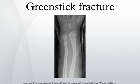The second form is a torus or buckling fracture, caused by impaction. They are usually the result of a force acting on the longitudinal axis of the bone. They are typically a consequence of a fall on an outstretched arm, so they mainly involve the distal radial metaphysis. The word torus is derived from the Latin word 'torus,' meaning swelling or protuberance.